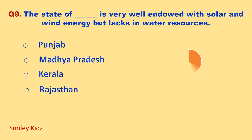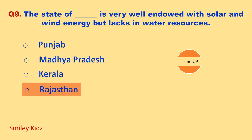Note: this is part 2. You can watch part 1 and part 3 from the playlist section of our channel. Time up. The correct answer is Rajasthan. The state of Rajasthan is very well endowed with solar and wind energy but lacks in water resources.